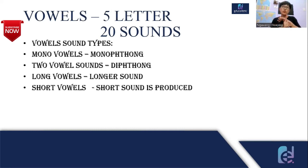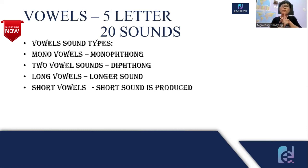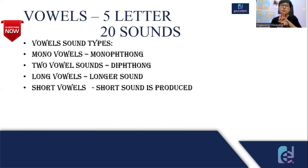The sounds of vowels can be divided into four types: monothong, diphthong, longer vowel, and shorter vowel. Monothong — 'mono' means one, so it is one sound. Diphthong — 'di' means two, so it is two sounds. Longer vowels are those produced for a longer duration, and shorter vowels are those produced for a shorter duration.